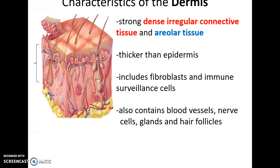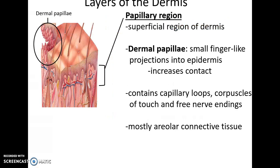The dermis is primarily made of dense irregular connective tissue and areolar tissue; it is much thicker than the epidermis. It includes fibroblasts that produce the protein collagen, immune surveillance cells, blood vessels, nerves, glands, and hair follicles. The more superficial region is the papillary region, which forms small hills (dermal papillae) that push up toward and interlock with the epidermis, increasing contact between the layers and helping to prevent them from separating. These papillae also contain capillaries that bring nutrients to the epidermis.